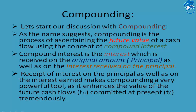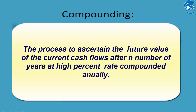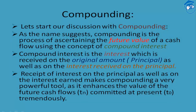Compounding is a process in which the future value of the present cash flow is calculated using the concept of compound interest. To summarize: compounding is a process to ascertain the future value of current cash flows after n number of years at i percent, compounded annually. Simply increasing by simple interest won't produce a high accumulation — the amount becomes large only when interest is reinvested per compound interest and is not taken out from the corpus. In successive slides, we shall discuss formulas and derivations for calculating future value through compounding.